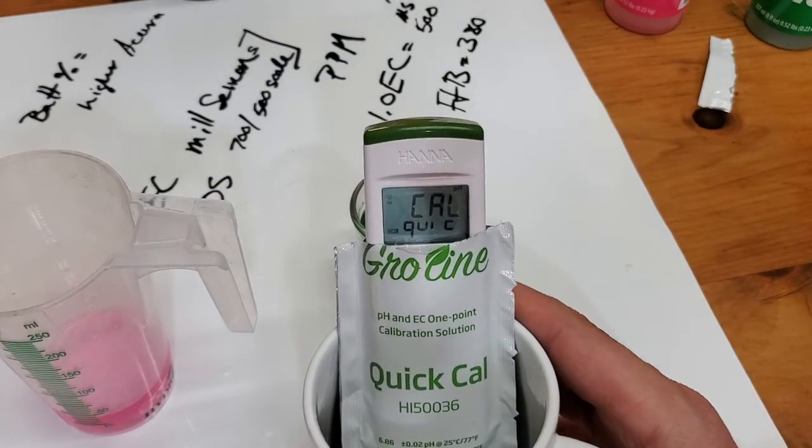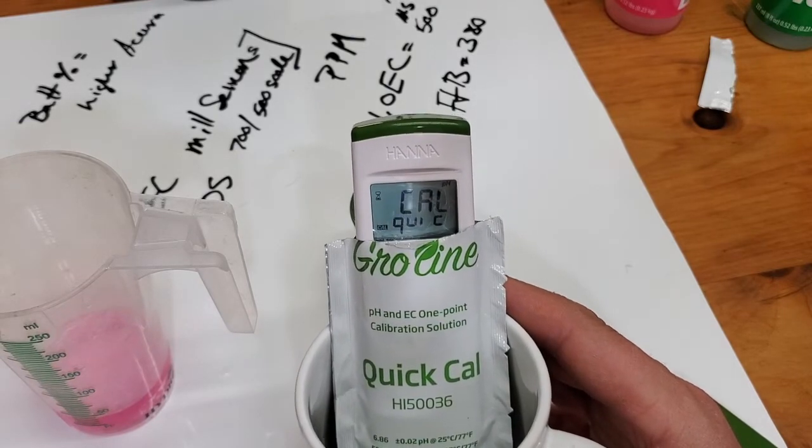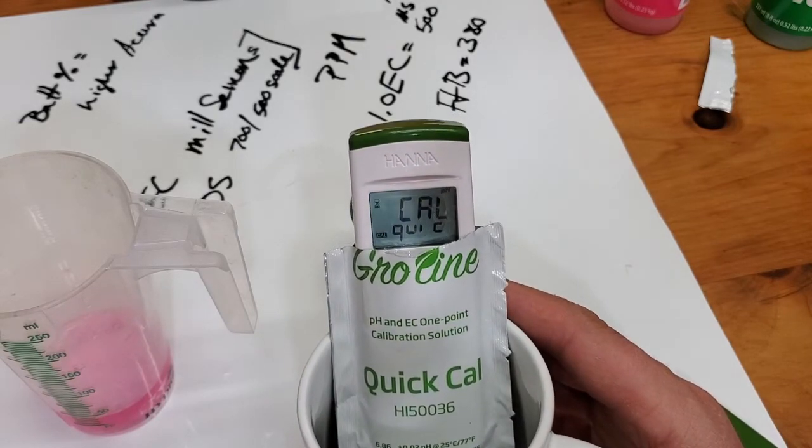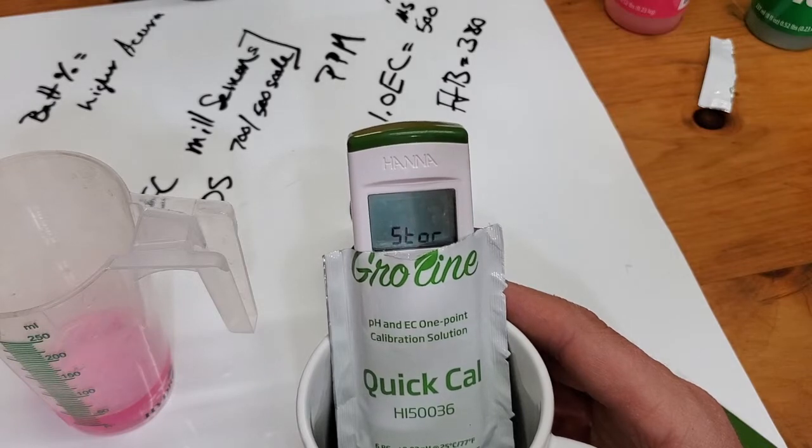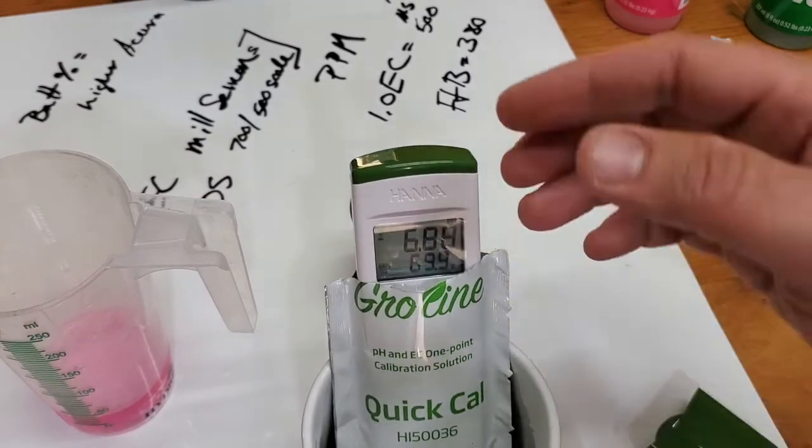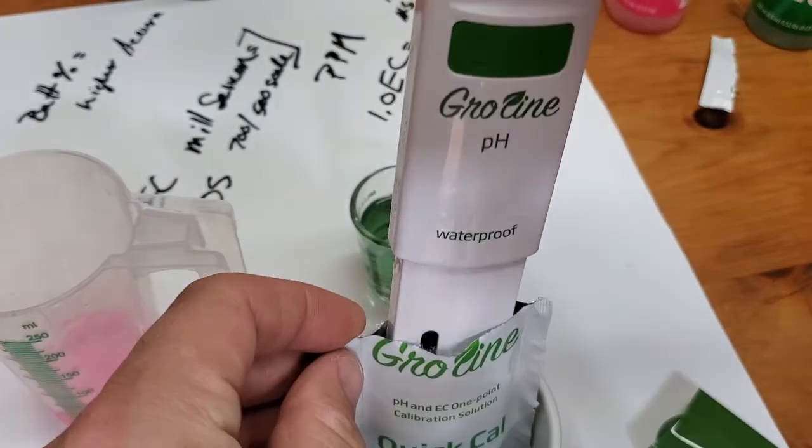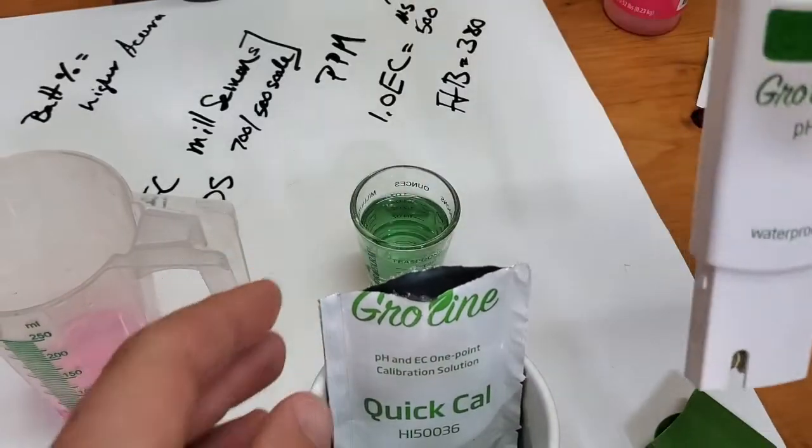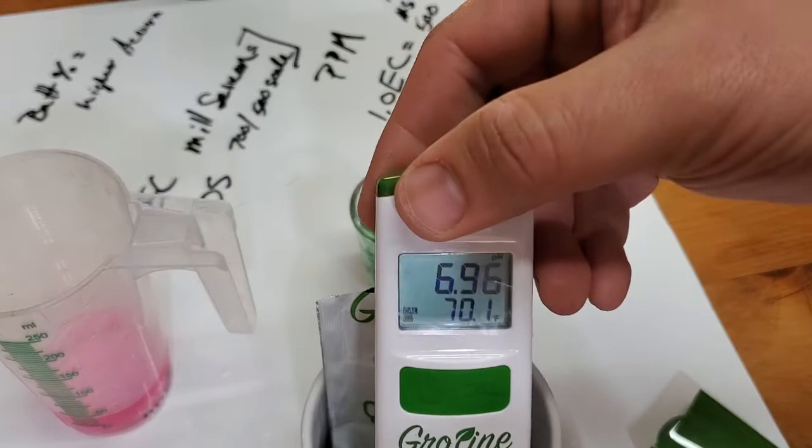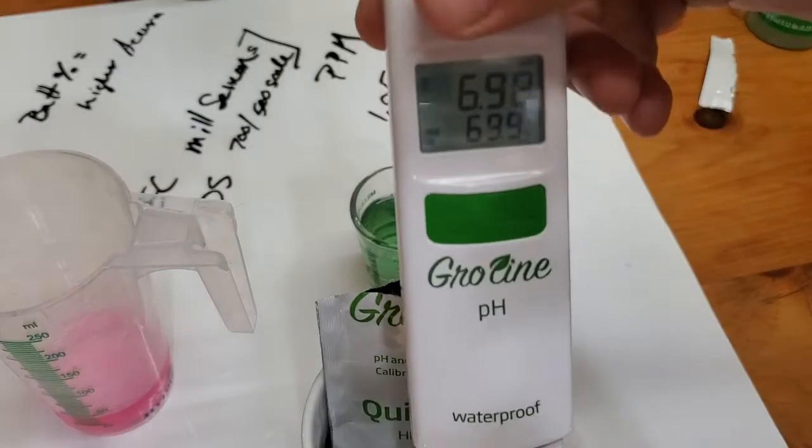This is the cool thing about the Grow Line stuff - you can calibrate with a four and seven solution. Boom, so that's set. It's calibrated, it's ready to use.